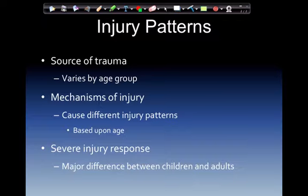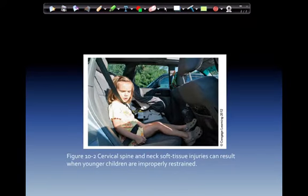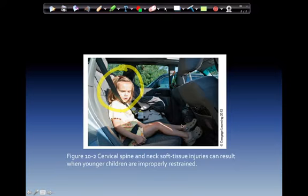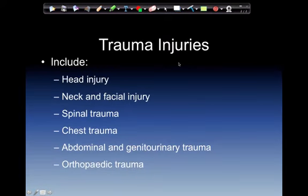Severe injury response is a major difference between children and adults, due to their physiology. Regarding cervical spine and neck, soft trauma injuries can result when younger children are inappropriately restrained — a sudden stop could do devastating things to the child's C-spine. Trauma injuries include head injuries, neck and facial injuries, spinal trauma, chest trauma, abdominal and genitourinary trauma, and orthopedic trauma.